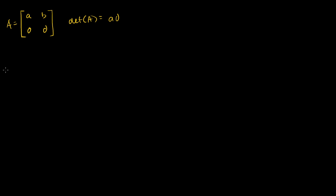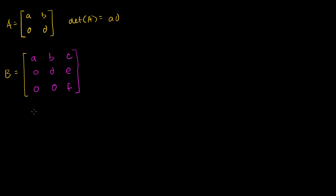Now let's say I have another matrix, call it B — a 3×3 matrix. Its entries are A, B, C in the first row; 0, D, E in the second row; and 0, 0, F in the third row. So once again, all entries below the main diagonal are 0. To find its determinant, we can pick the column with the most 0s. Expanding along that first column: the determinant of B equals A times the determinant of the submatrix D, E, 0, F.